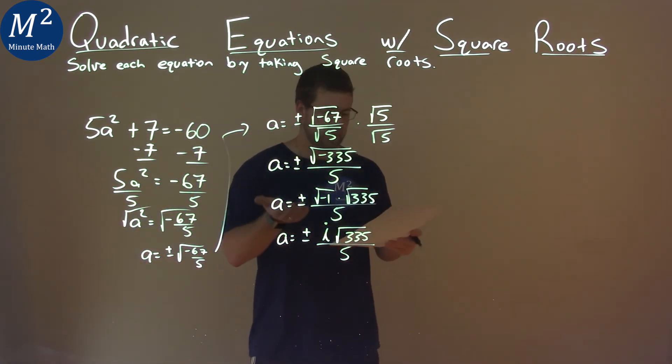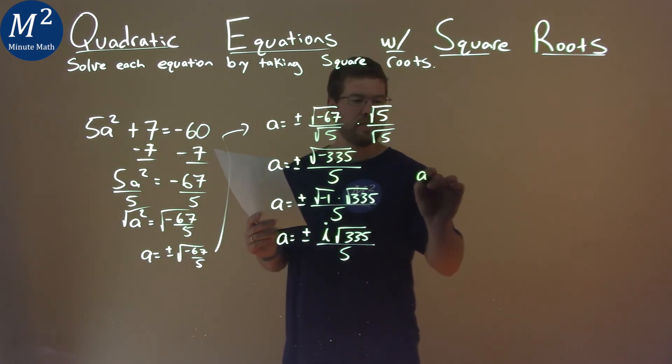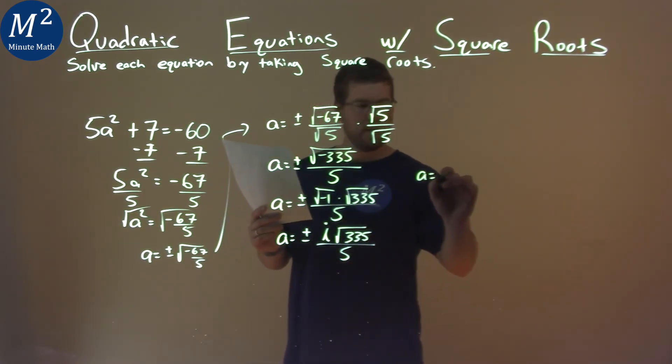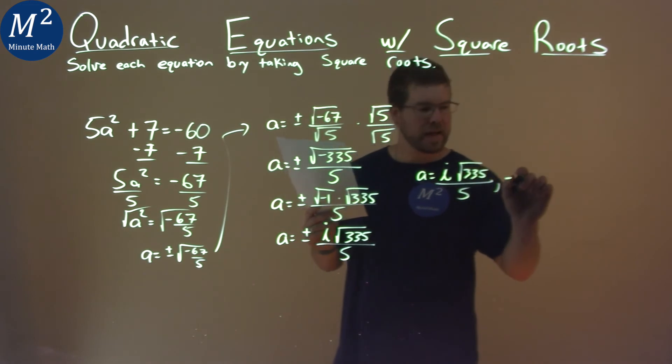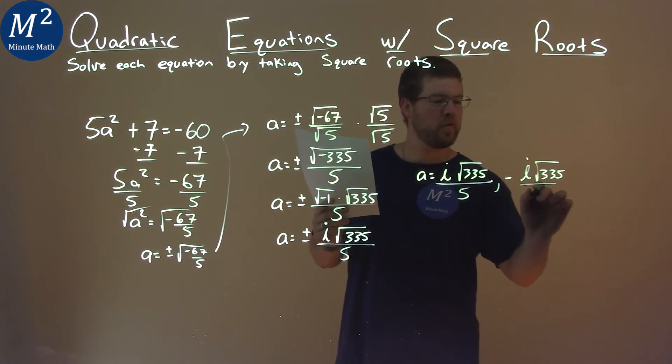So now we actually have it pretty much broken down. It doesn't simplify anymore. So we can write this as two numbers next to each other instead of plus or minus. A equals positive i square root of 335 over 5, and negative i square root of 335 over 5.